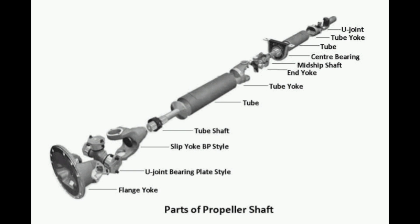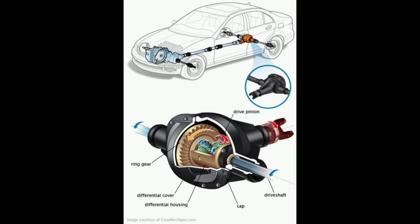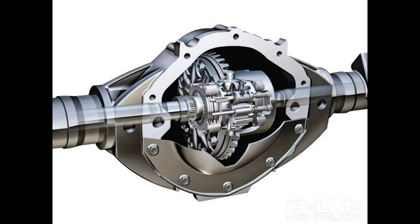The propeller shaft is the third component in the automobile transmission system. It bridges the gap between the gearbox and the differential, accommodating the substantial distance between these two components by being slender and lengthy, facilitating the connection.